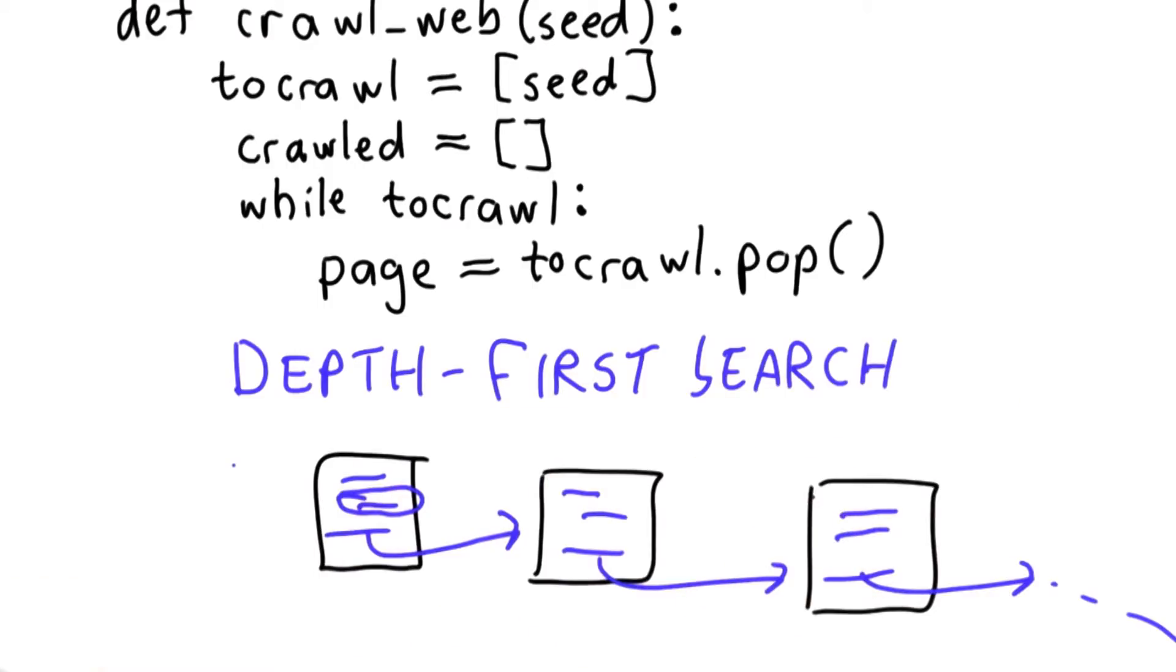If our goal was to get a good corpus of the web quickly, doing a depth-first search would probably not be the best way to do that. And some of the questions at the end of your homework ask you to figure out ways to change the search order that will give us a better way of capturing content on the web.